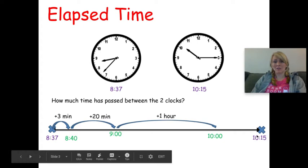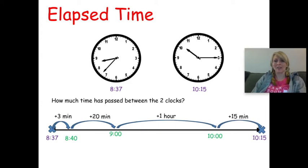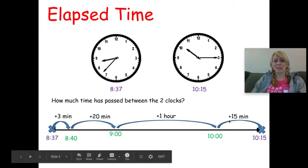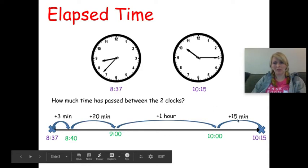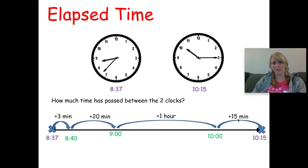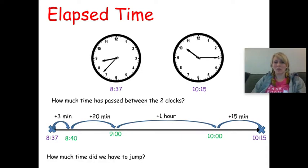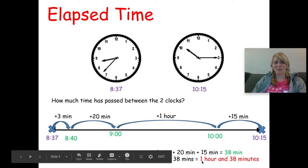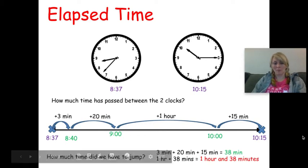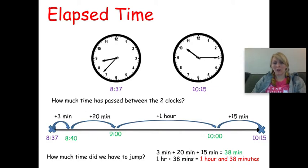Once I'm at ten o'clock, I need to make it to ten fifteen — that's fifteen more minutes. Now I put all my time jumps together: twenty minutes plus fifteen minutes makes thirty-five, plus three more makes thirty-eight minutes total. Combined with the one-hour jump, my total is one hour and thirty-eight minutes. So the elapsed time from eight thirty-seven to ten fifteen is one hour and thirty-eight minutes.